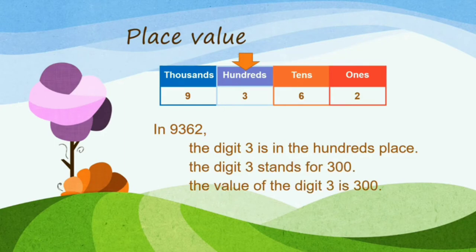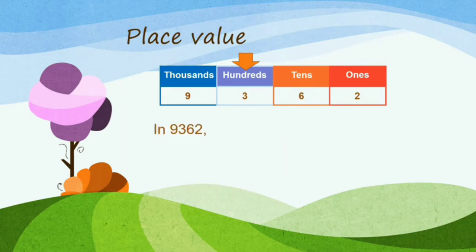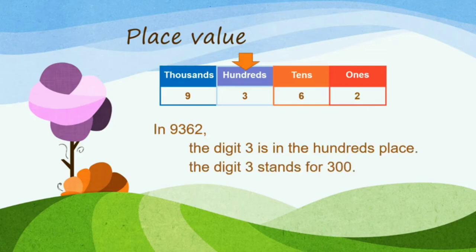We have here number 3. The digit 3 is in the 100th place. And the digit 3 stands for 300. The value of the digit 3 is 300.